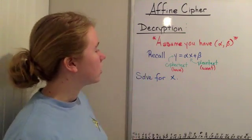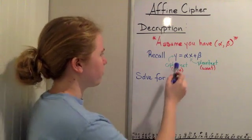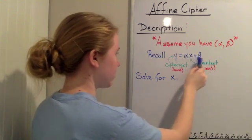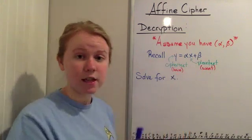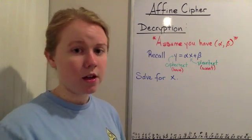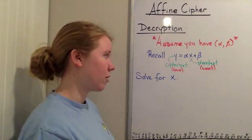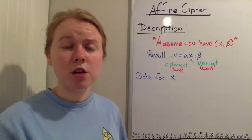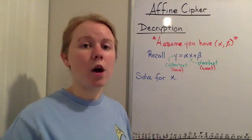Now if you'll recall, for encryption, y equals alpha times x plus beta, where y is the ciphertext, which we have in this case because we're trying to decrypt, and x is the plaintext, the actual message, which we don't have but we want.